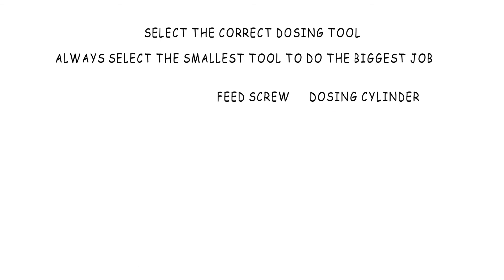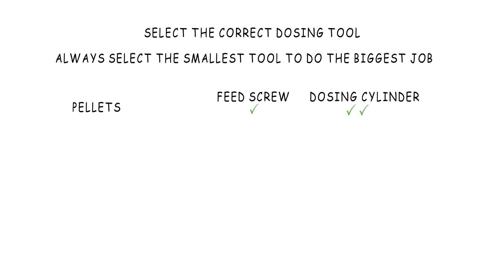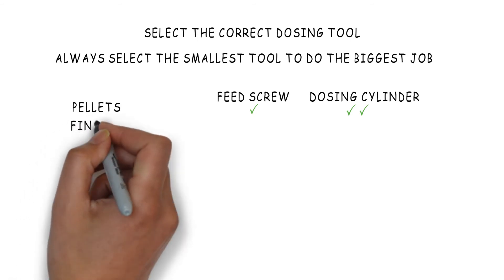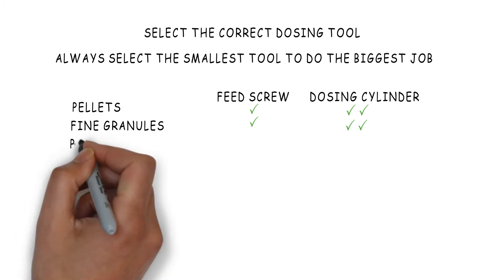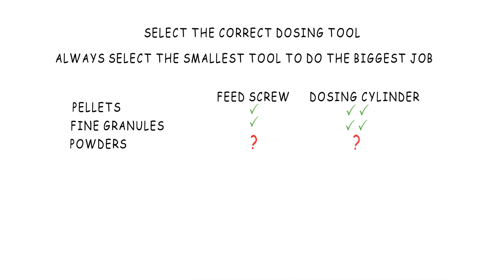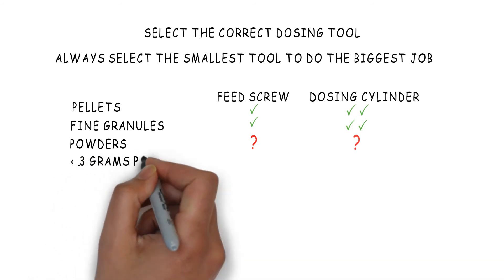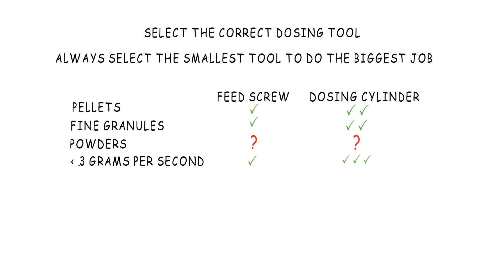Now let's do a comparison. If you're running pellets, both tools will do a good job. The dosing cylinder is a good choice for smaller amounts, critical applications, transparent colors, yellows, or reds that have to match. For fine granules, both can handle it, but the dosing cylinder is more accurate because it eliminates pulses. For powders, both have the capability, but powders cover a very broad spectrum — we'd definitely want to evaluate and potentially test before deciding. If you're running less than 3 grams per second and your material works in a dosing cylinder, you definitely want to go that route, as eliminating the pulsing effect becomes very critical — typical for small shots or extremely low letdowns, such as 1% color or less.